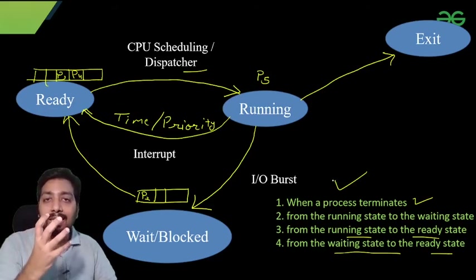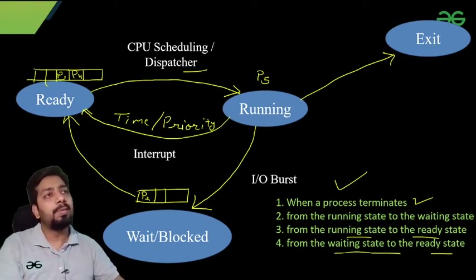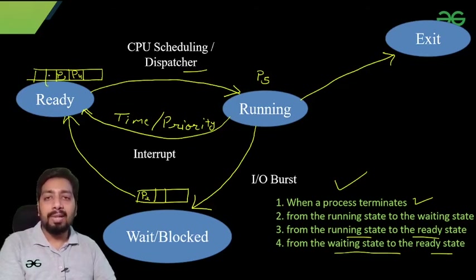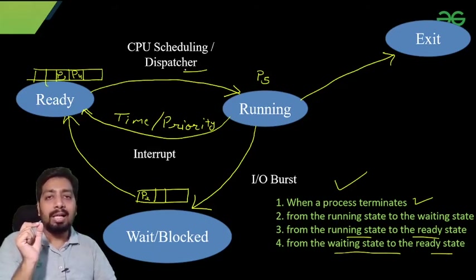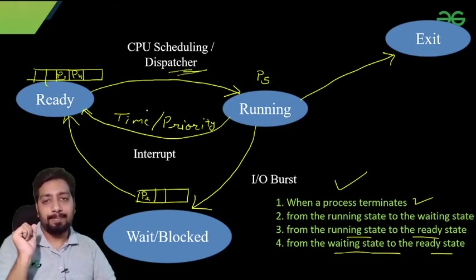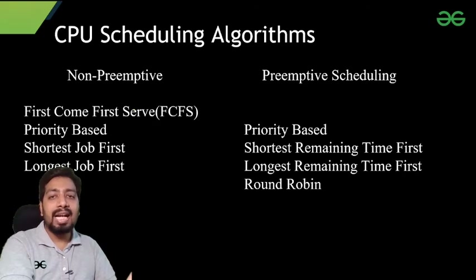The major task of the CPU scheduling algorithm is to select one process from the ready queue; that selected process gets the CPU. Loading and unloading of the process, or context switching, is done by the dispatcher — not the scheduler. Now let me tell you what kinds of CPU scheduling algorithms we have.